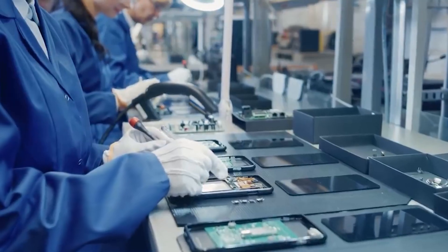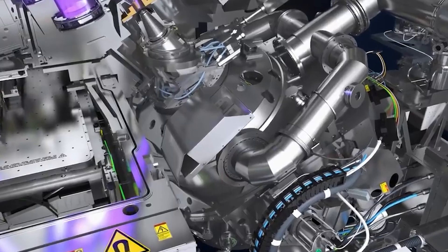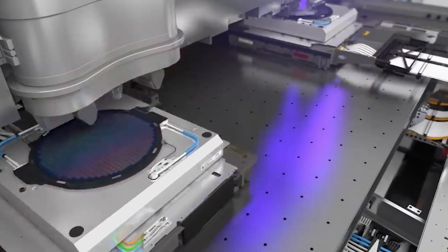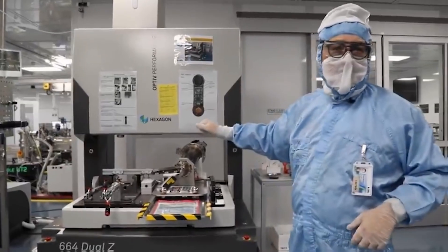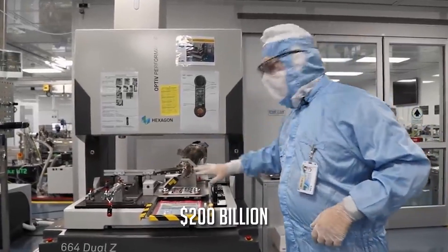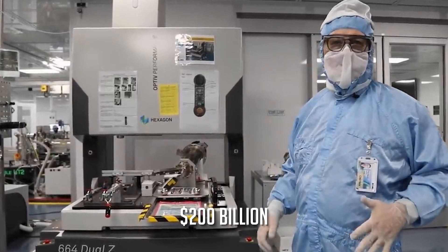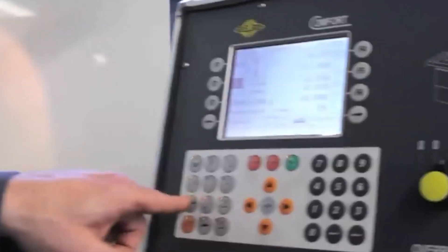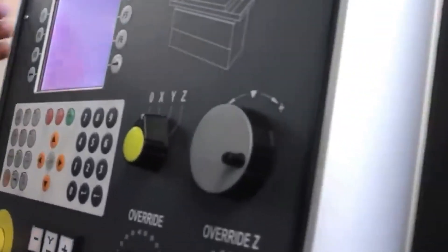Because there aren't many businesses capable of producing the most advanced form of chips using this equipment, ASML has a monopoly in its industry. And with a 2022 valuation of 200 billion dollars, ASML is the most highly valued European tech company by market capitalization in the world today.